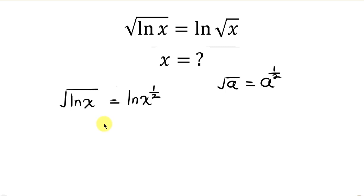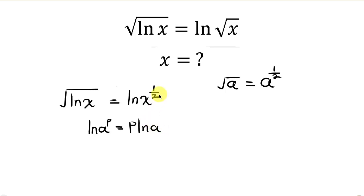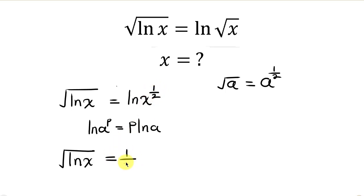Our next step is to apply the property of logarithm that says when we have ln a raised to the power p, this is the same as p times ln a. So we have the square root of ln x equal to 1 over 2 times ln x.